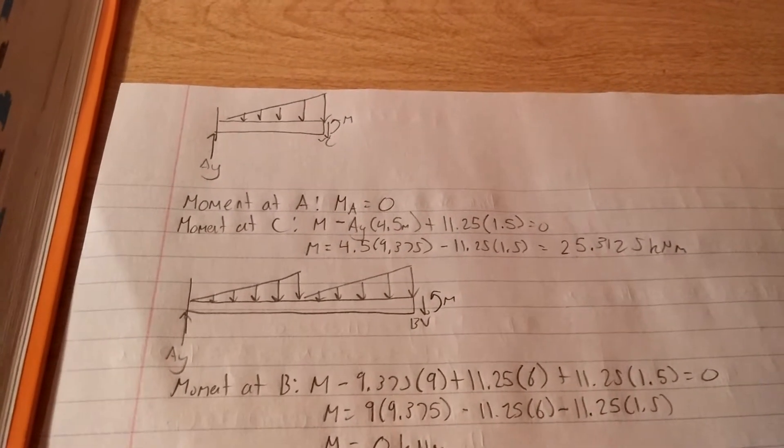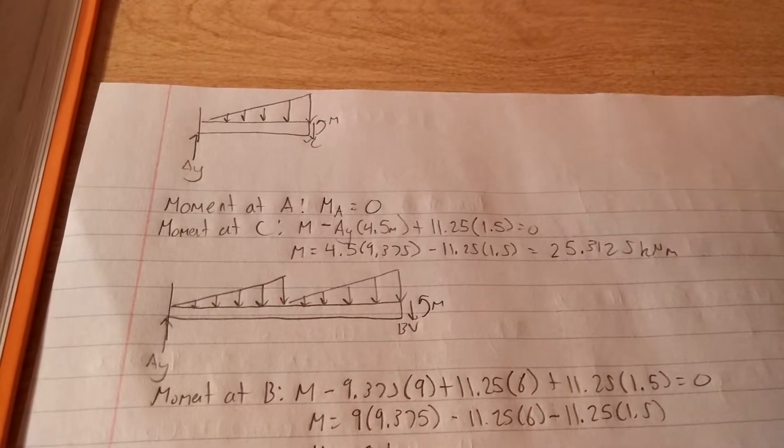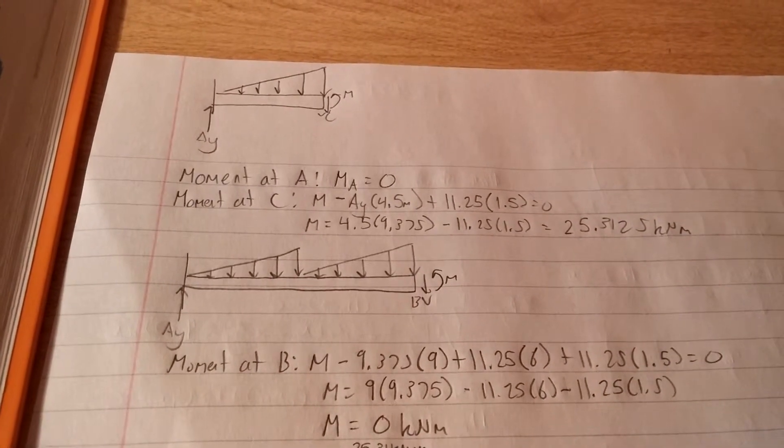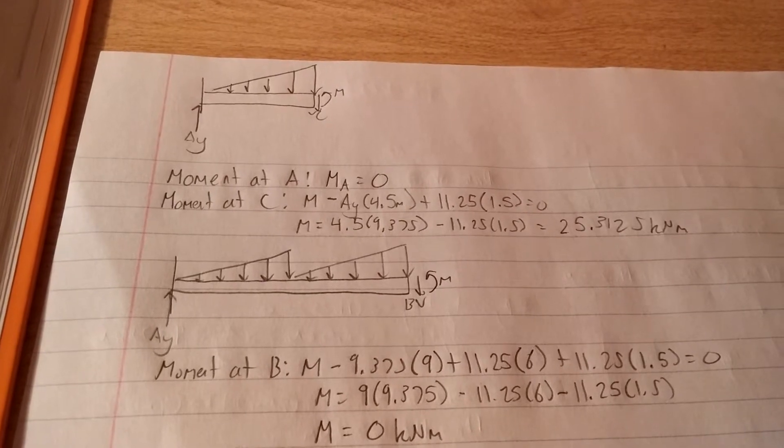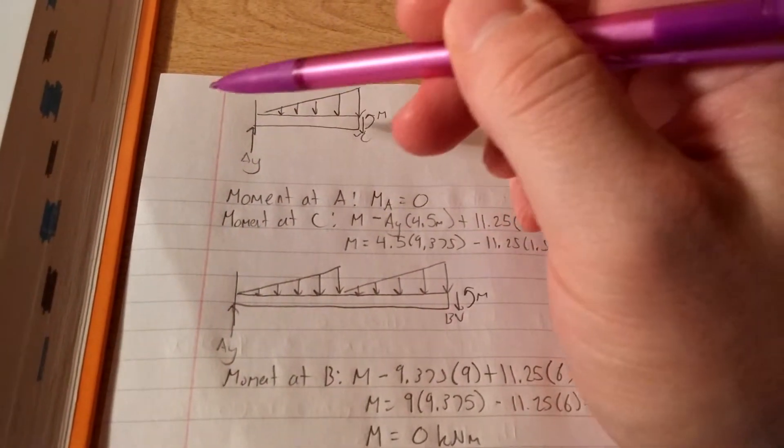We're going to do it the exact same way, except we don't really need to worry about where it's zero. We're going to figure out the moment at A. If we section it off right at there, if we're taking the moment about A,